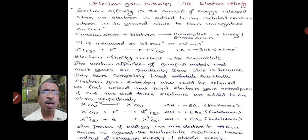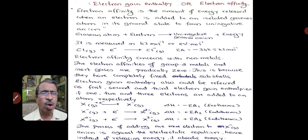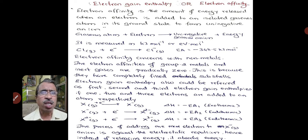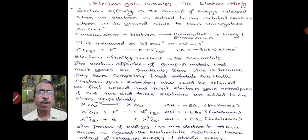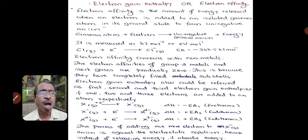If an electron is added to an isolated gaseous atom, it forms a uninegative gaseous ion and the reaction is exothermic. When an electron is added to this uninegative gaseous ion, we get a binegative gaseous ion, but this reaction is endothermic. Because the negatively charged gaseous ion and the electron both have the same charge, the repulsive force is greater, and also the size of the negative ion is greater than its corresponding atom. Therefore, the second electron gain enthalpy is always endothermic.